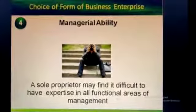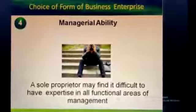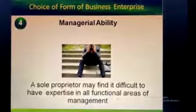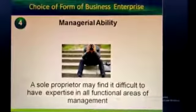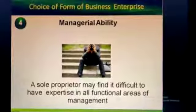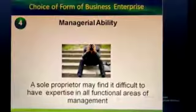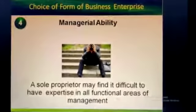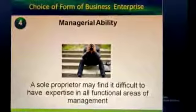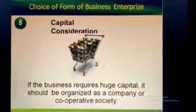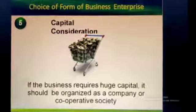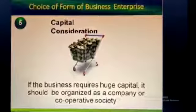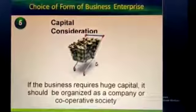Fourth, the nature of operations and the need for personalized management also affect the choice of form of organization. A sole proprietor may find it difficult to have expertise in all functional areas of management. Under partnership, cooperative societies, and companies, division of work is possible. If operations are complex and require personalized management, then the company form is a better alternative. For simplicity of operations, proprietorship and partnership may be suitable. Fifth is capital consideration — finance is the basic requirement of any business. If the business requires huge capital, it should be organized as a company or cooperative society. For medium and small-sized businesses, partnership or sole proprietorship may be chosen.